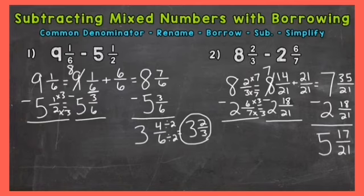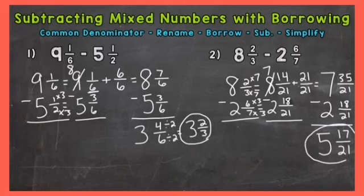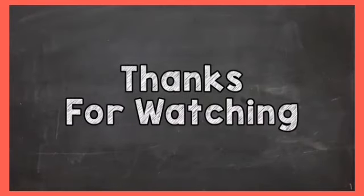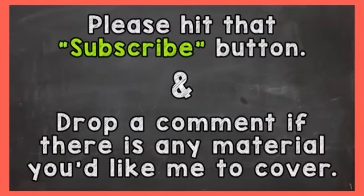Always look to see if you can simplify the fractional part of a mixed number. Seventeen and twenty-one have only a common factor of one, so it is already in simplest form. Five and seventeen twenty-firsts is our final answer. So there you have it — that's how you subtract mixed numbers with borrowing. I hope that helped. Thanks so much for watching. Until next time, peace.